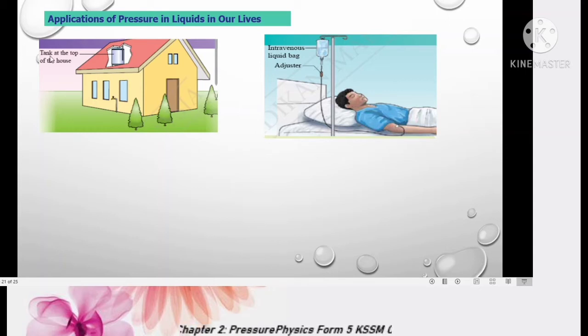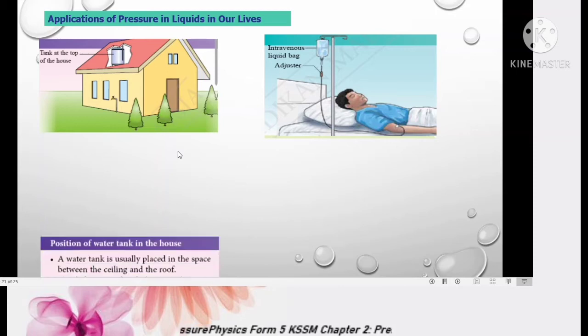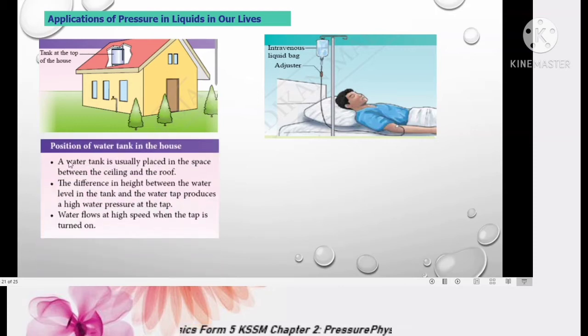The first application is water tank placed at the top of the house. A water tank is usually placed in the space between ceiling and the roof, meaning at higher place. The difference in height between the water level in the tank and water tap produces a high water pressure at the tap. The depth of liquid is measured from the surface of water in the tank to the tap. If we put the tank higher up, we increase the depth of liquid, thus the pressure at the tap will become higher. The higher pressure will cause the water to flow at high speed when the tap is turned on.